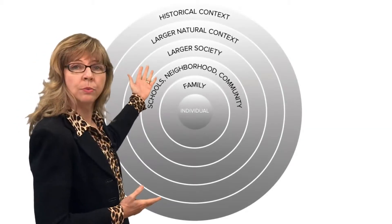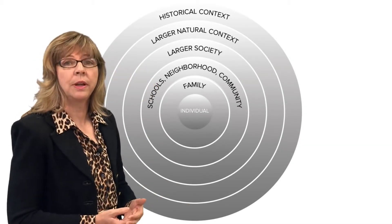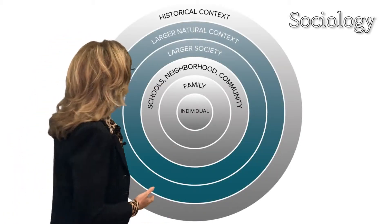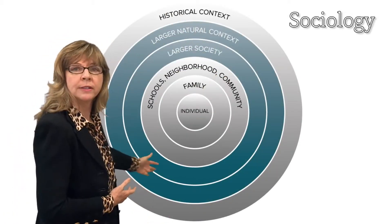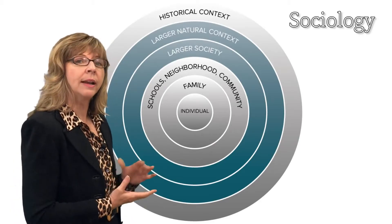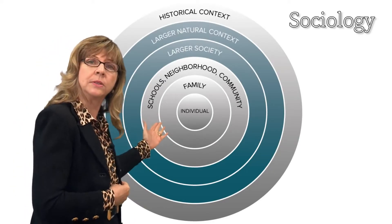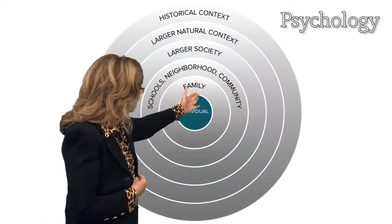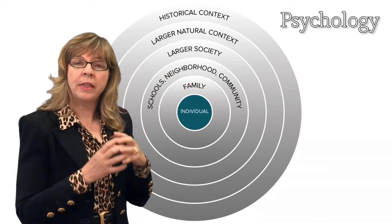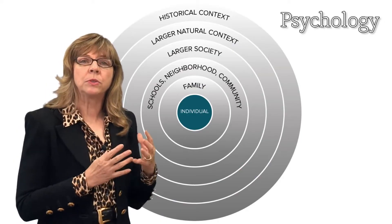To look at it a different way, the human ecosystem might be depicted as a series of interconnected rings or levels. Different disciplines focus on different levels. Sociology focuses on the large outer rings — the institutions and organizations within our society — analyzing issues such as class, race, and ethnicity.